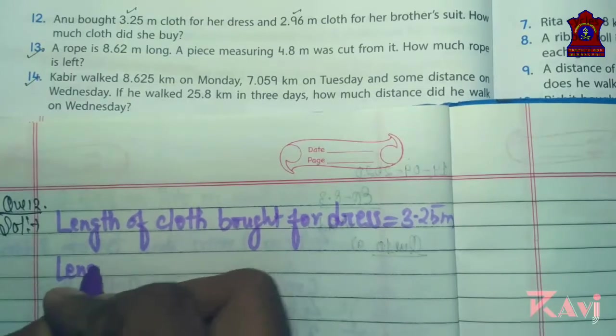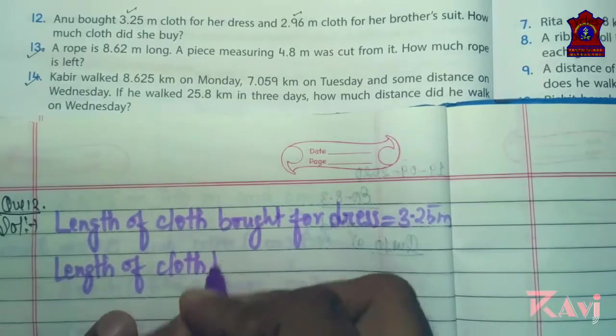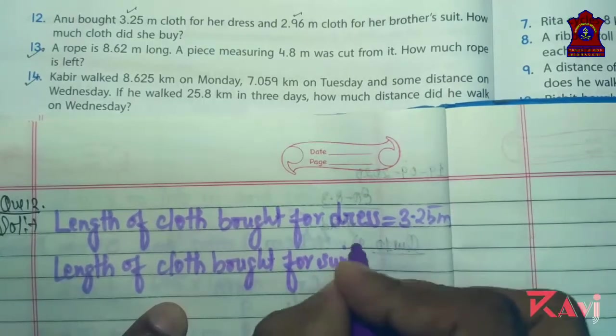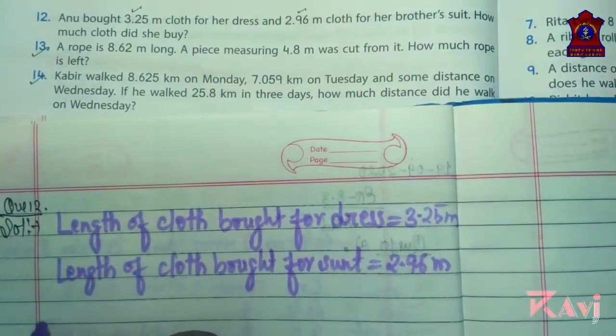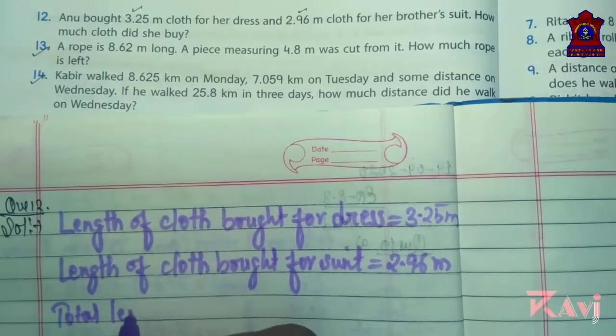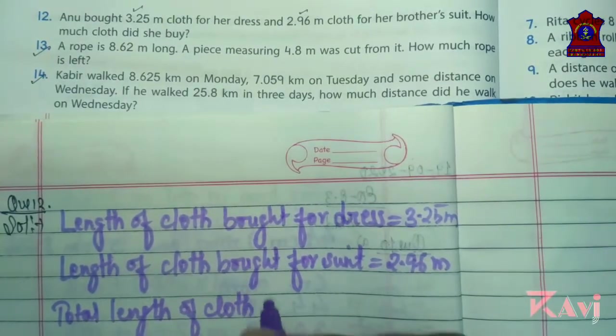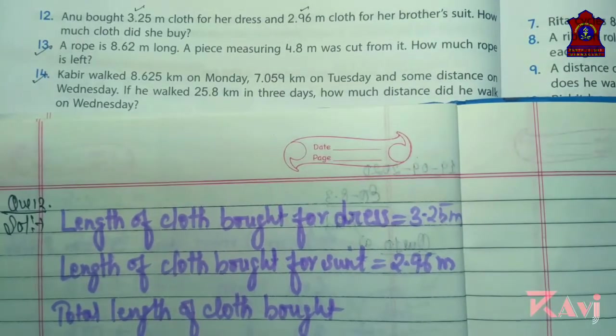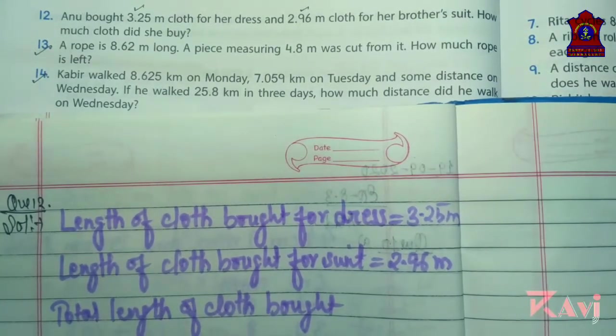Now again, length of cloth bought for suit equals to 2.96 meters. Therefore we can write total length of cloth bought.